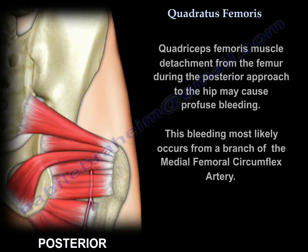The medial femoral circumflex artery can also be identified in the center of the quadratus femoris muscle. Detachment of the quadratus femoris from the femur during a posterior approach to the hip may cause profuse bleeding, most likely from a branch of the medial femoral circumflex artery.